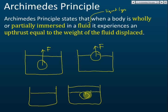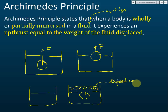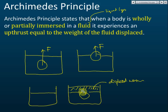Initially the water is at this level, and this is the displaced water. According to Archimedes' principle, the upthrust — the force that pushes the ball upwards — has a magnitude equal to the weight of this displaced water.